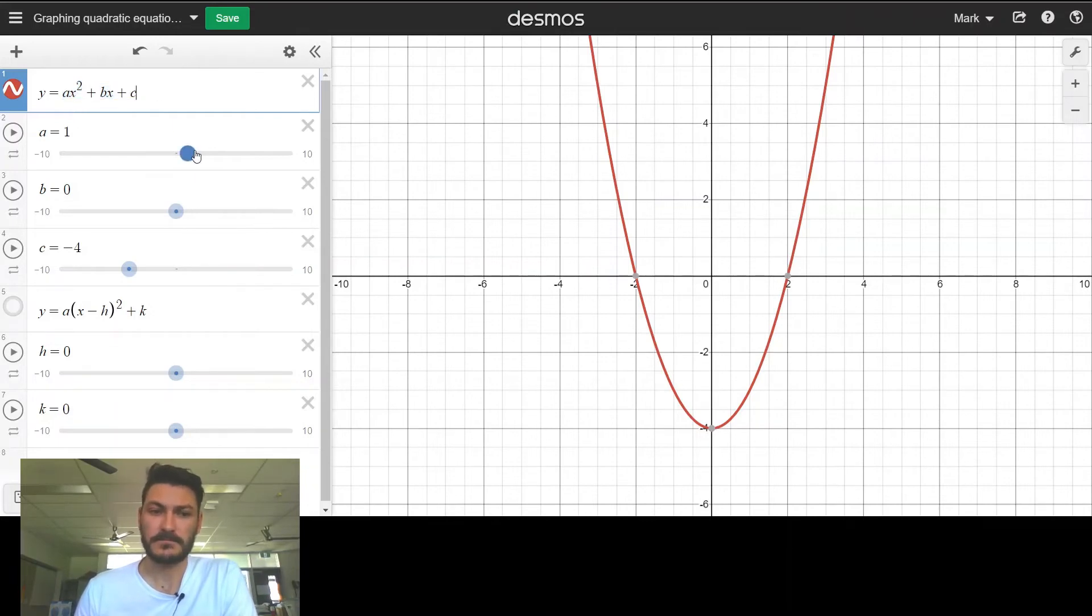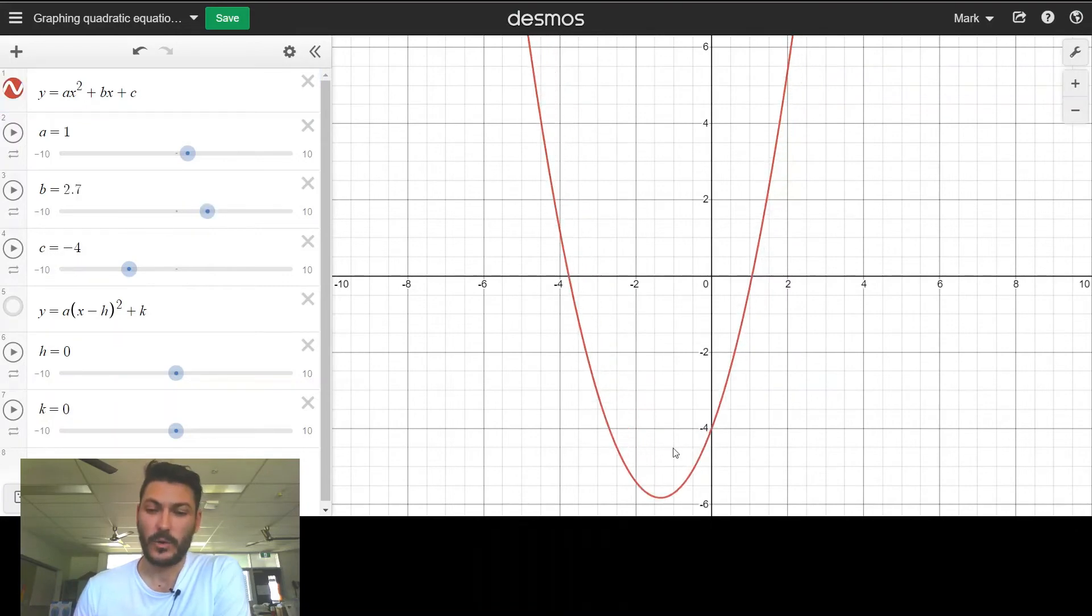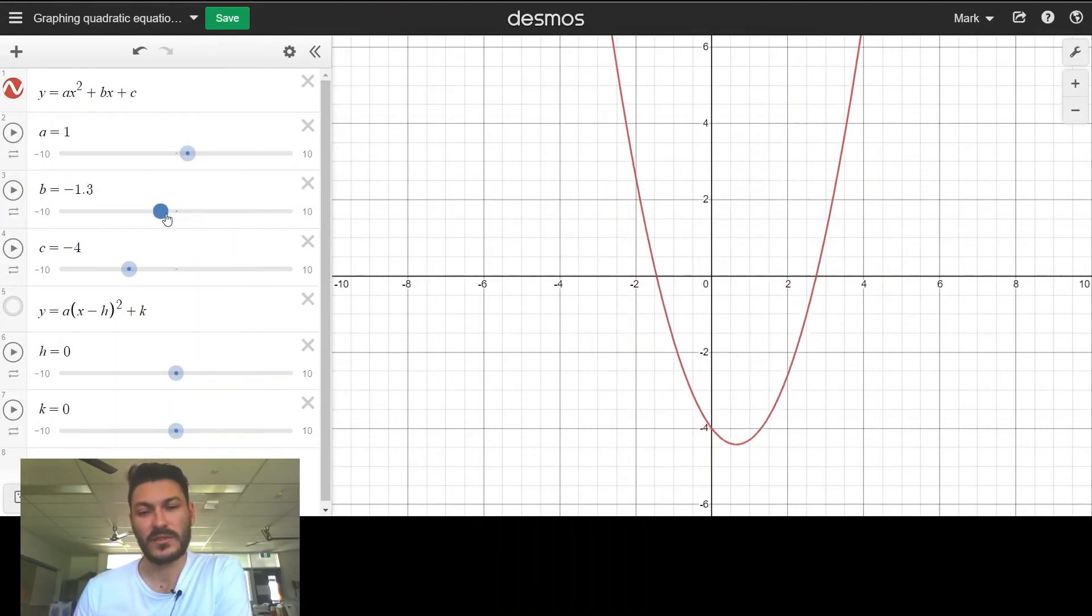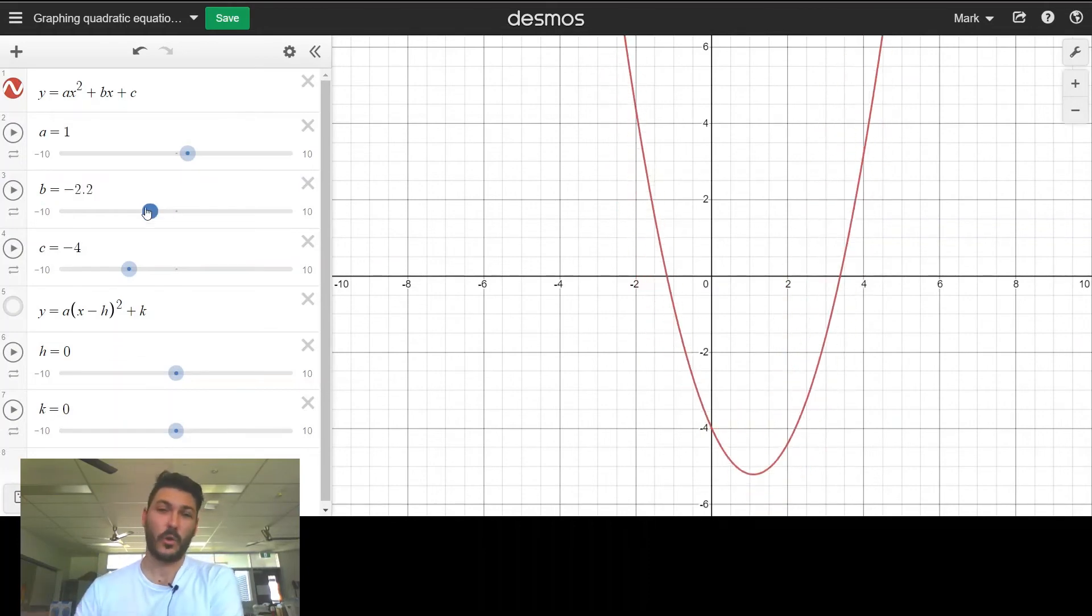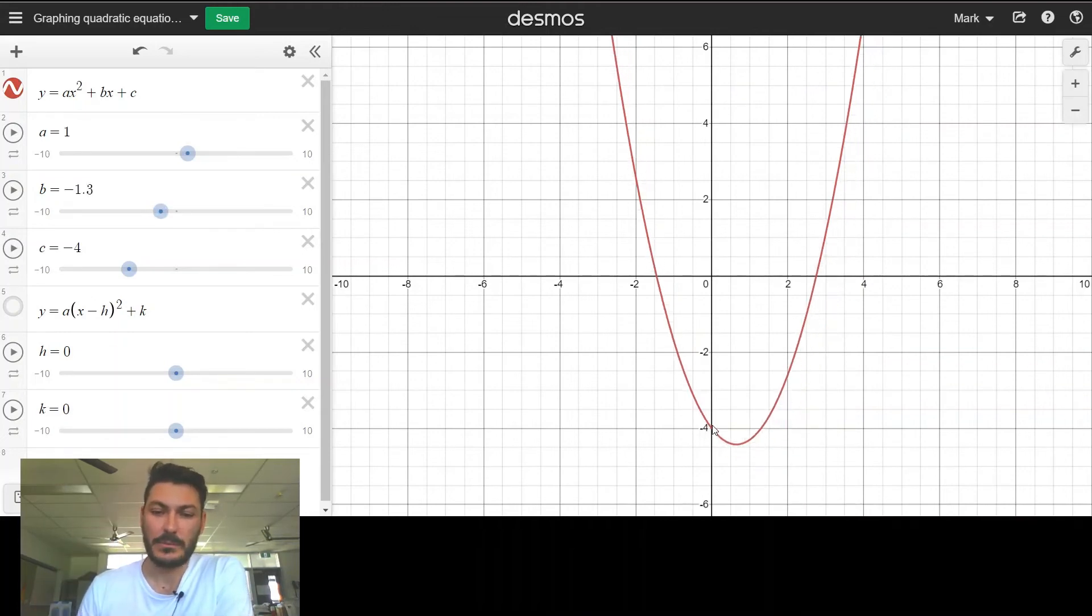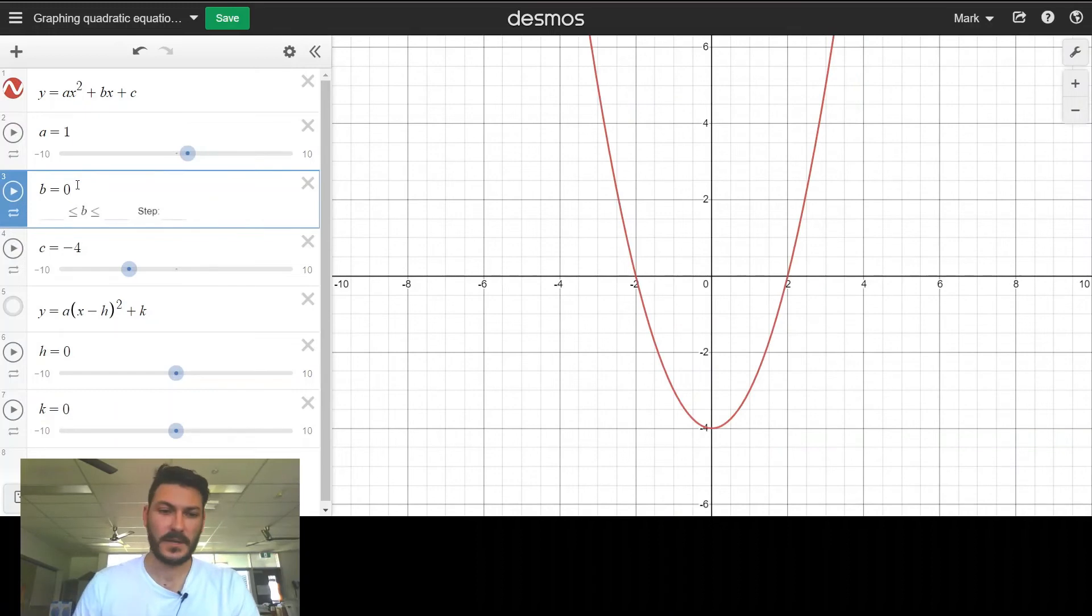Now onto b. This b term doesn't necessarily just move my equation left and right—it does, but always keeping in mind that it wants to use this c value as the y-intercept. If I make b positive, it's going to move my parabola in the negative direction, moving the axis of symmetry across but not the turning point itself. If I make b negative, it moves it to the right in the same way. So b moves it left and right, however it's also going to shift up and down as you move about in order to keep this y-intercept at the c value.